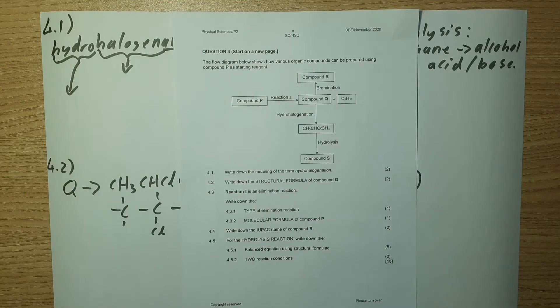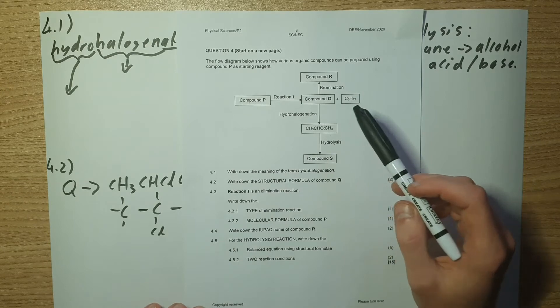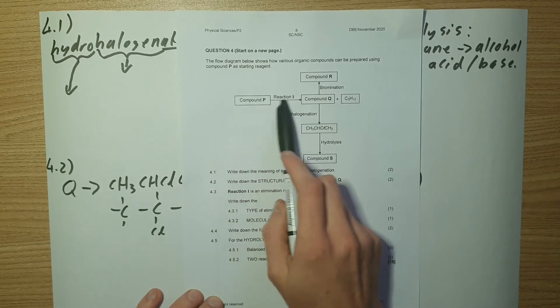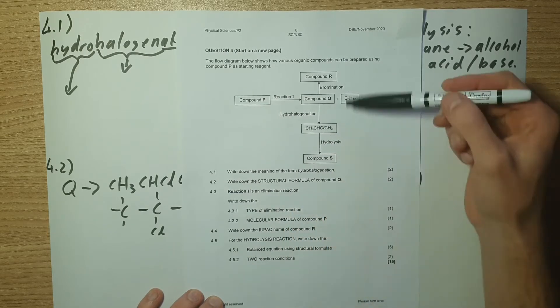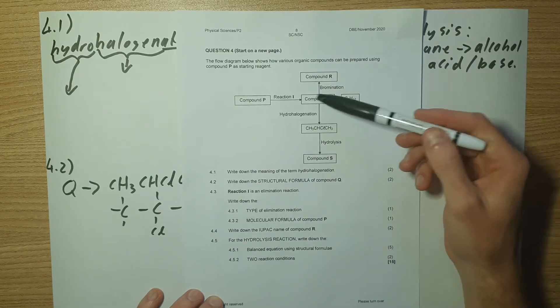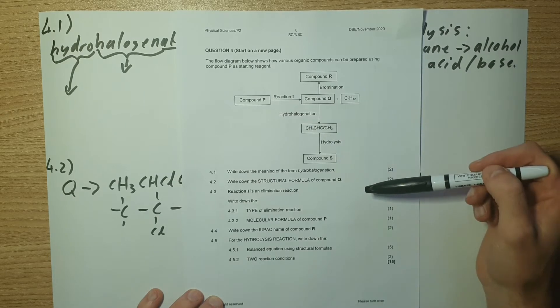Okay let's get started with question 4. So question 4 we can see we have a flow diagram happening over here. We're starting at compound P, we have reaction 1 happening to form compound Q plus C5H12, then we move up we've got bromination, coming down we have hydrohalogenation and then hydrolysis.